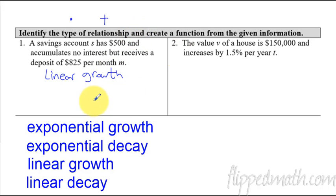That's the type of relationship that we have. Now let's create a function. We're going to say that the savings account is S equals, but we're going to use function notation and tell what's the other variable we're using on the other side. It's going to be S of M. That's the same thing as just saying S equals. We're just going to have an M as a variable on the other side.